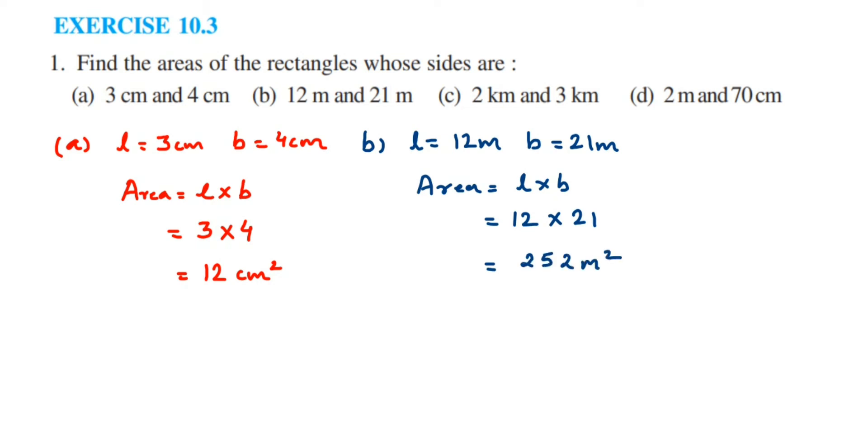Then the next one. In the next one, problem C, we have the units in kilometer. So length is equal to 2 kilometer and breath is equal to 3 kilometer. So area is equal to, so don't forget to write the formula every time you solve the problem. So area is equal to length into breath. So length is 2 and breath is 3. So 2, 3 is 6. So 6 kilometer square.